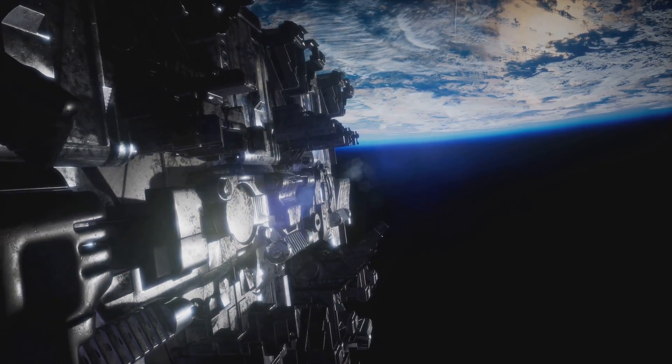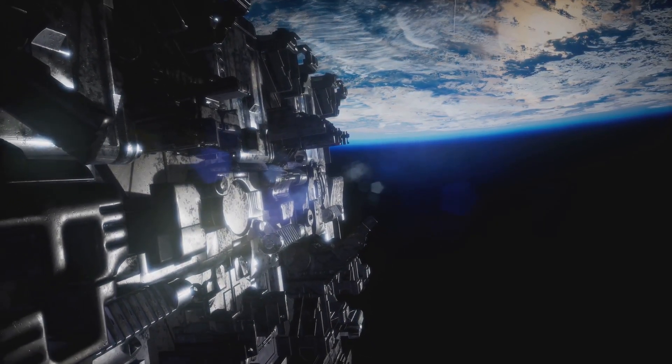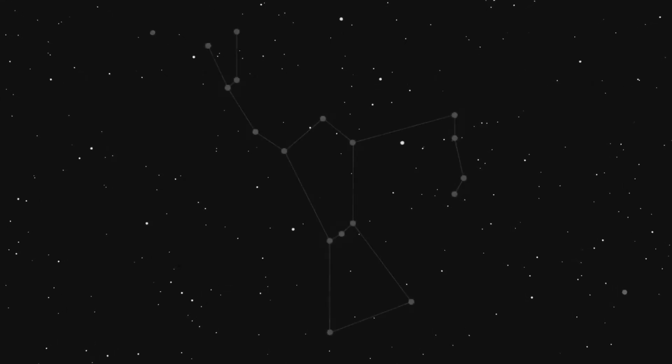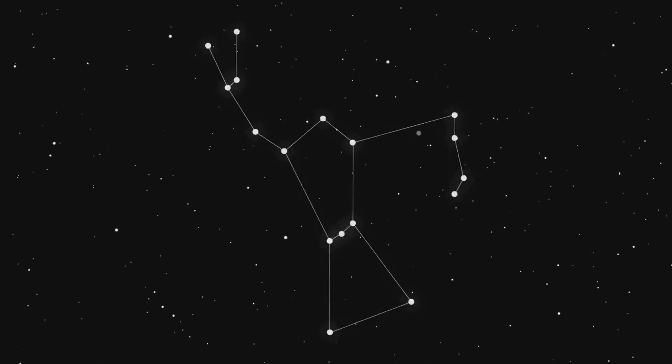This galactic journey also shapes our perception of the universe. The stars we see at night aren't stationary. They are other celestial bodies each embarking on their own cosmic voyages. This is why constellations change shapes over thousands of years.